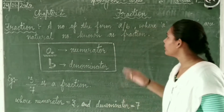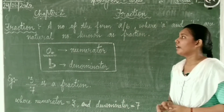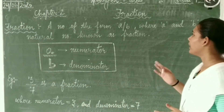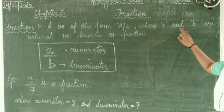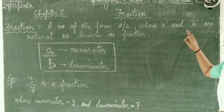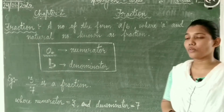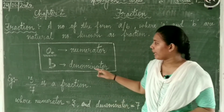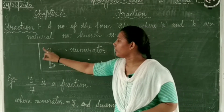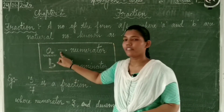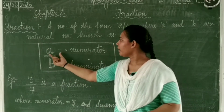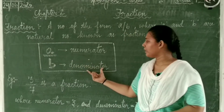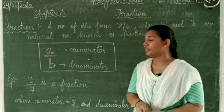Here is the definition of fraction. A fraction is a number of the form A by B, where A and B are natural numbers, and is known as a fraction. A upon B represents a fraction where A is known as the numerator and B is known as the denominator.